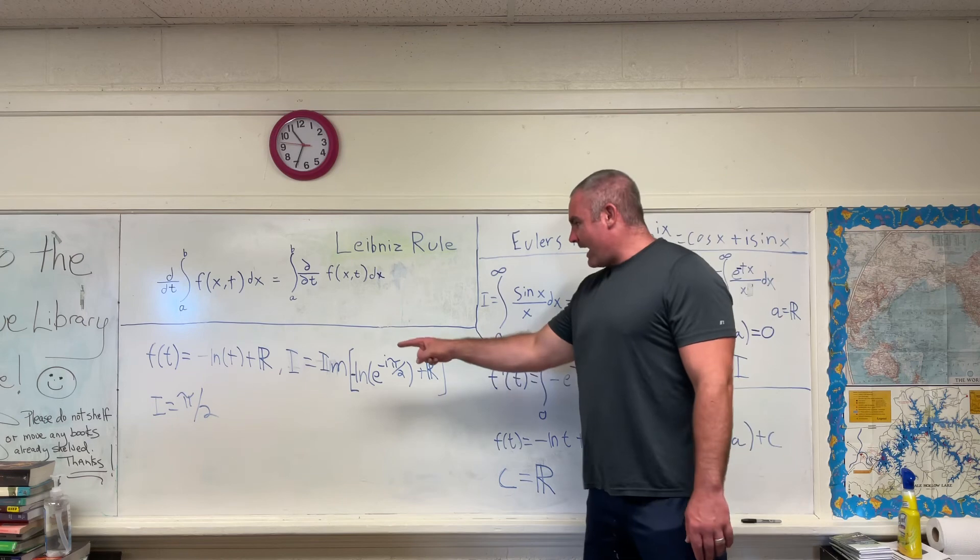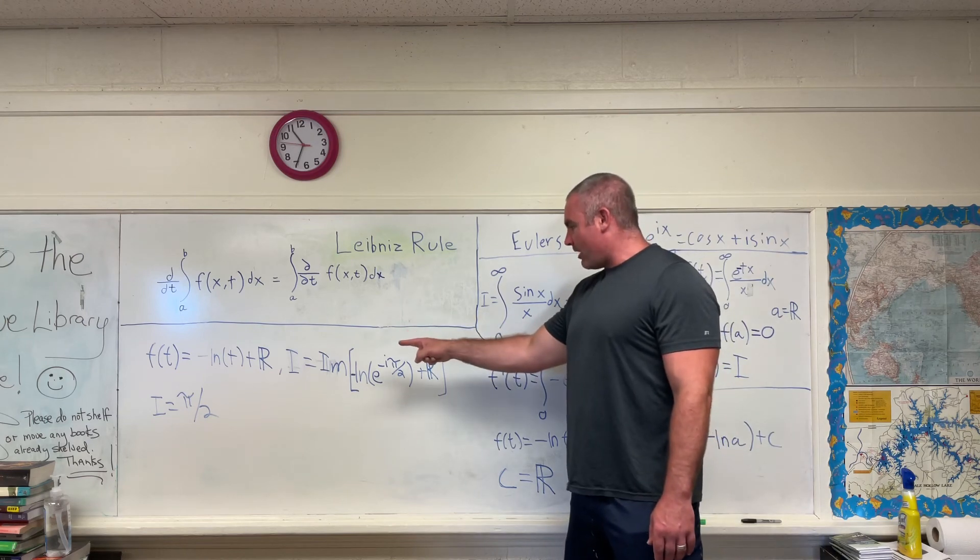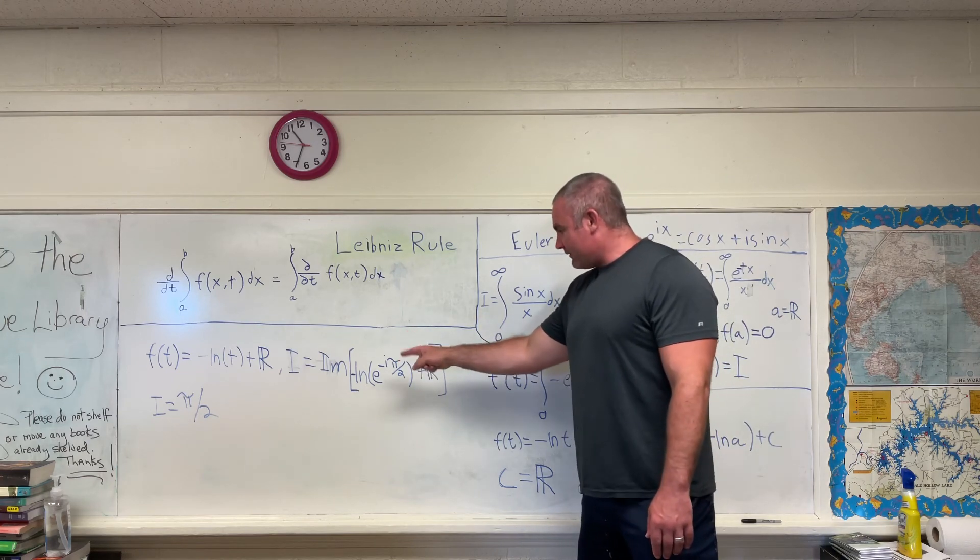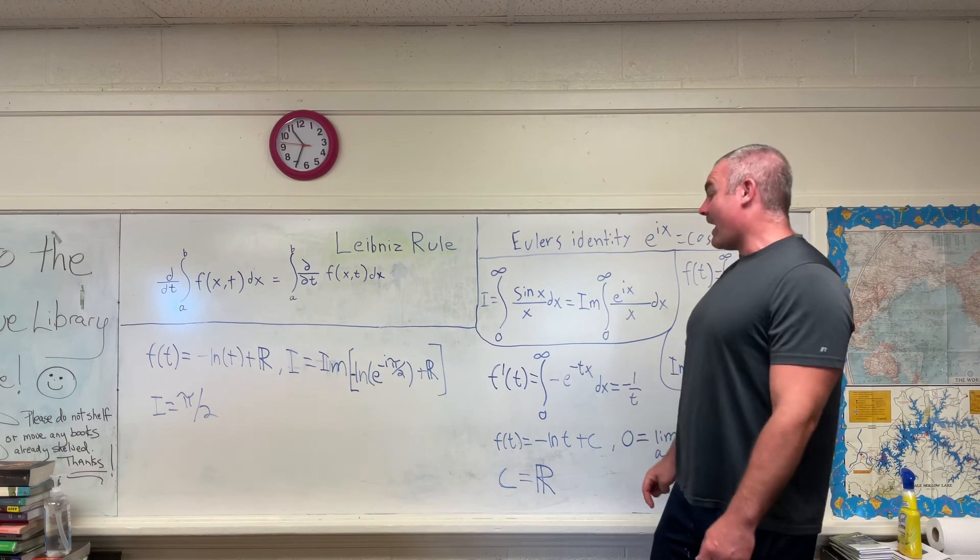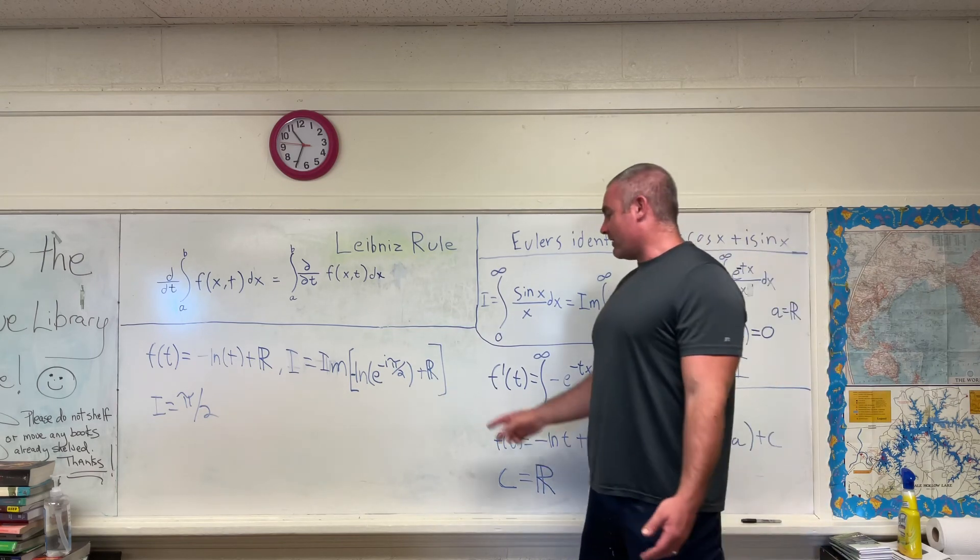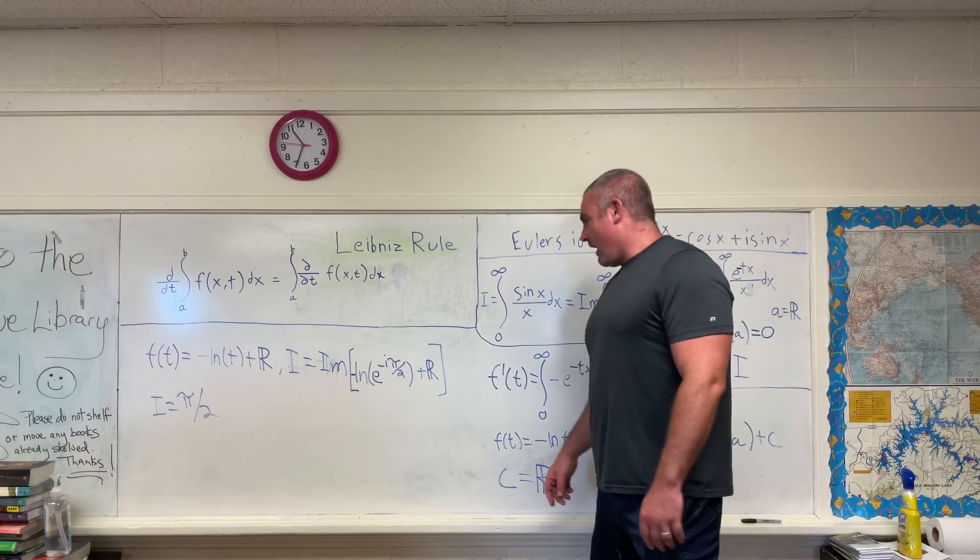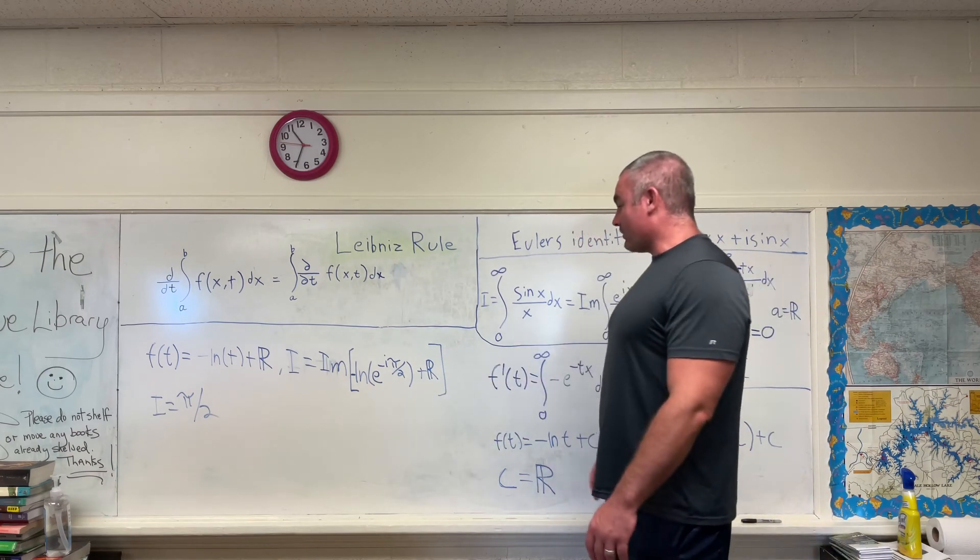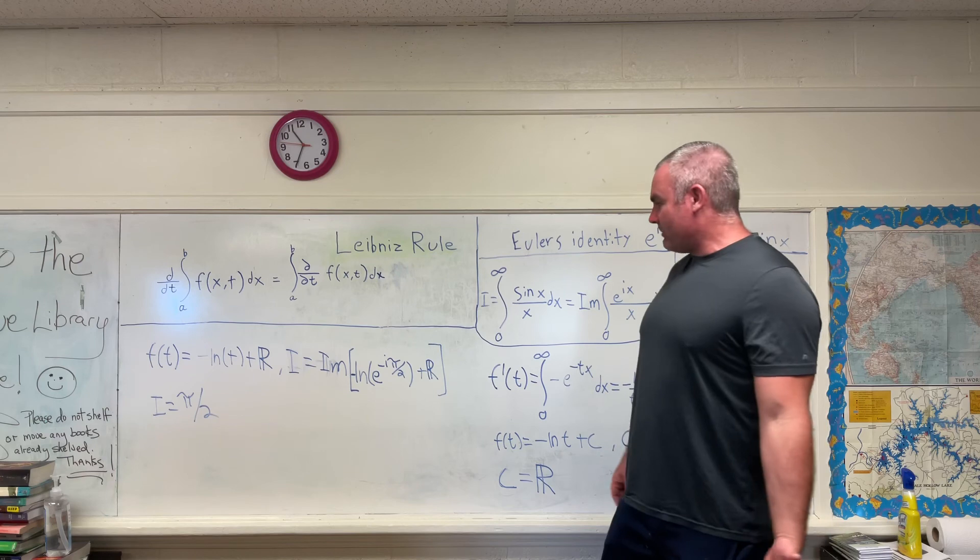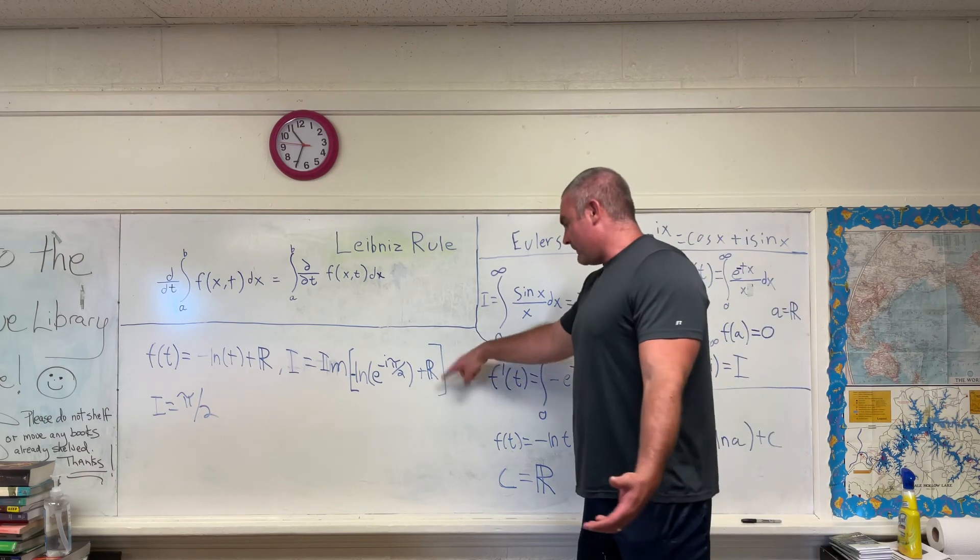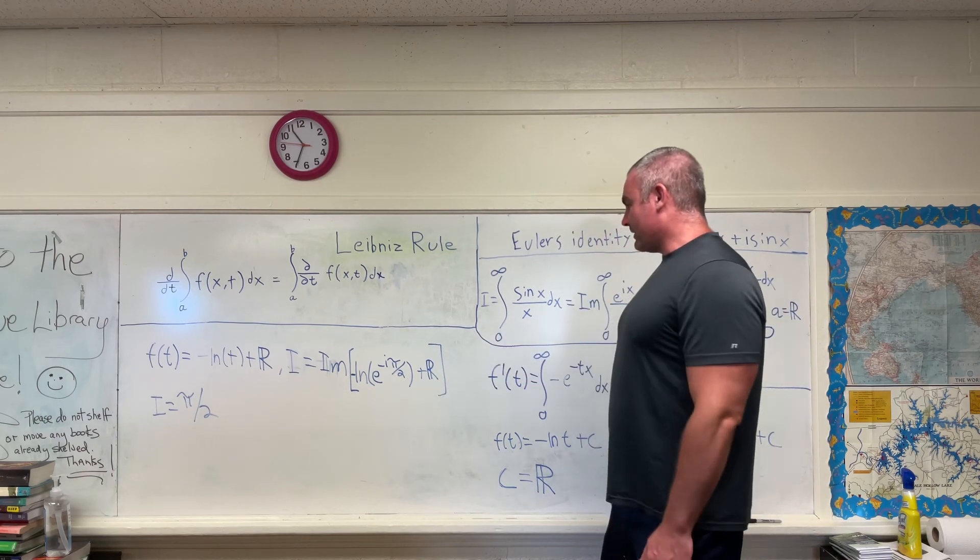So anyway, we have i being equal to the imaginary part of negative natural log e to the negative i pi over 2 plus some real number, divergent or not. So that real number is going to drop out because if we're taking the imaginary part of it, that part doesn't matter right there. That real number doesn't matter.